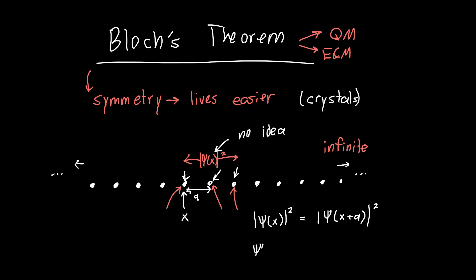Or in other words, psi of X plus A, we can only be different from psi of X by some coefficient C, where the magnitude of C has to be one. Because if we were to put C into here, and then take its magnitude, that would just be one, and nothing would change. But we'd like to know more about this coefficient C. What form can it take?